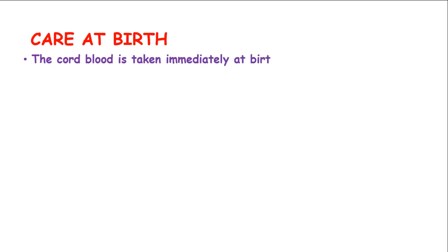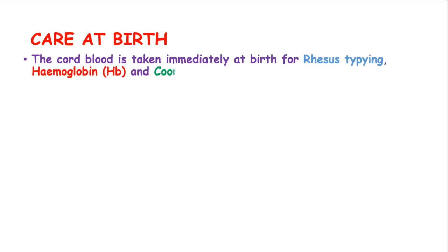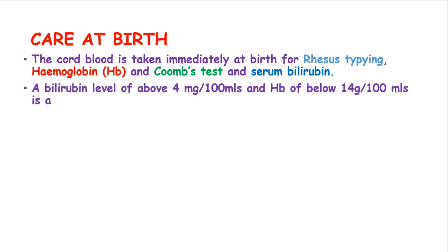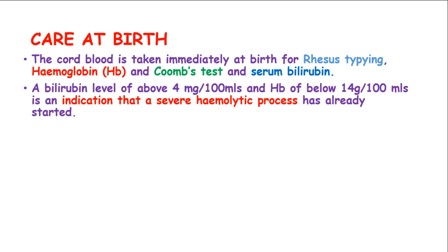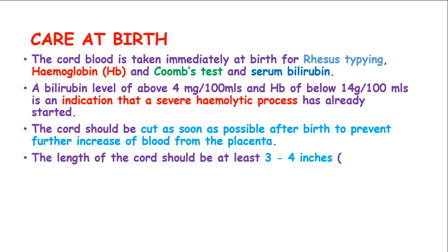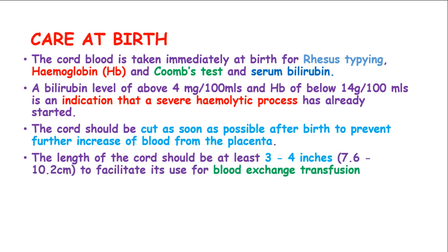Care at birth: cord blood is taken immediately at birth for Rhesus typing, hemoglobin, Coombs test, and serum bilirubin levels. Bilirubin levels of more than 4 mg per 100 ml of blood and hemoglobin below 14 g per 100 ml is an indicator that a severe hemolytic process has already started. The cord should be cut as soon as possible after birth to prevent further increase in blood from the placenta.